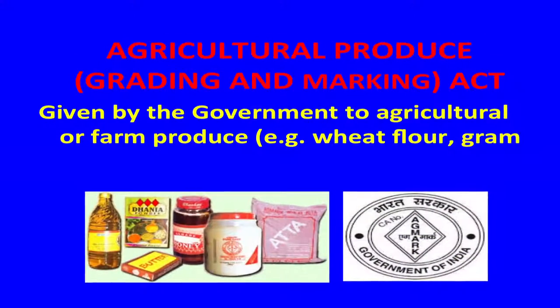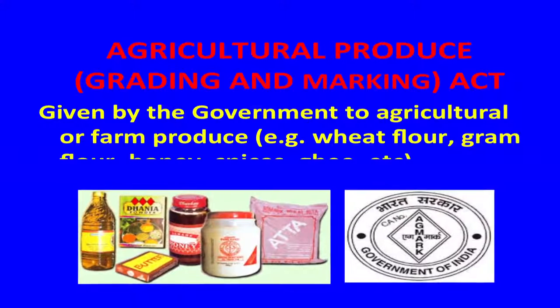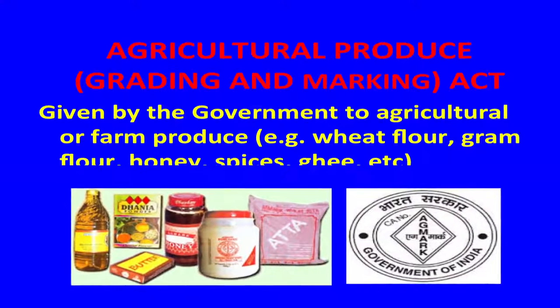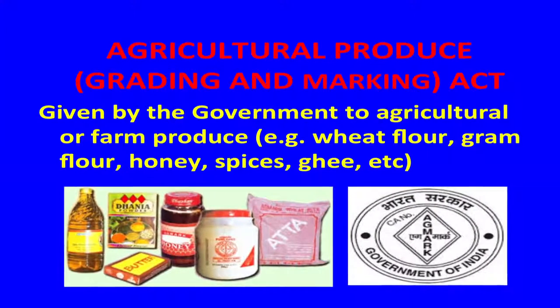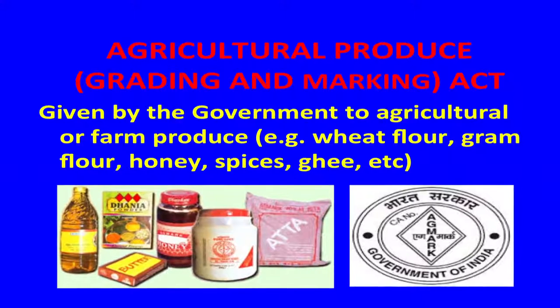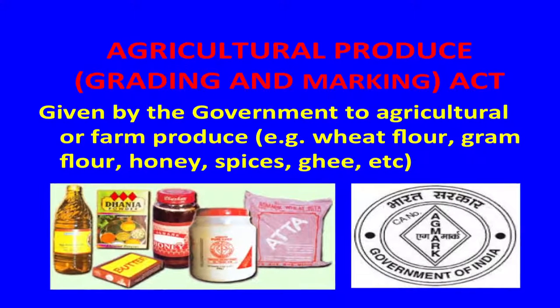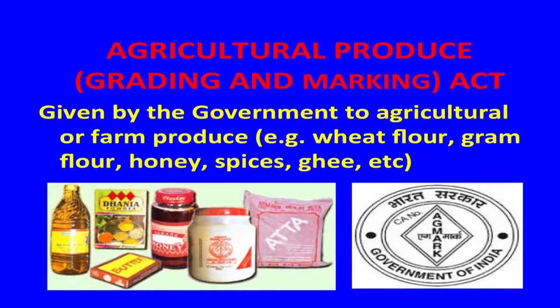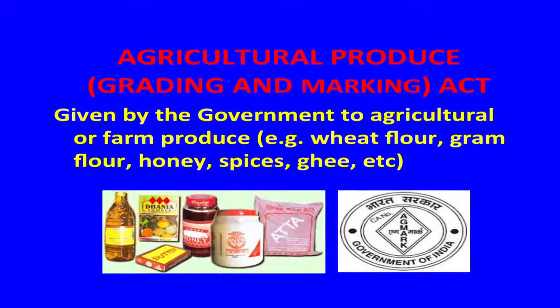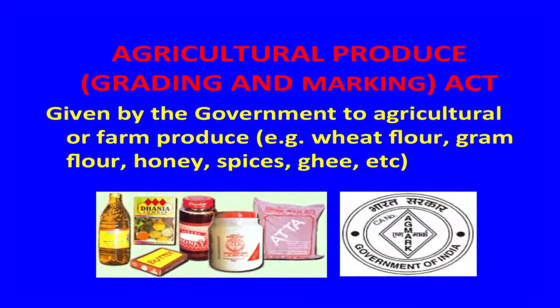The first law is AGMARK. AGMARK stands for Agriculture Produce Grading and Marketing Act, given by the government to agriculture or farm produce. For example, wheat flour, gram flour, honey, spices, ghee — and it stands for quality, efficiency, and packaging of the product. As you can see in the picture, there are various products that contain the AGMARK like atta, oil, spices, butter, and honey and many other products.